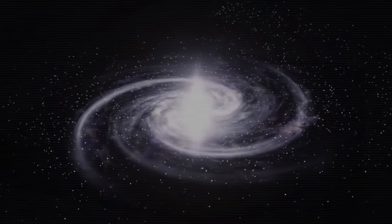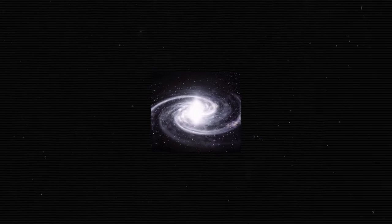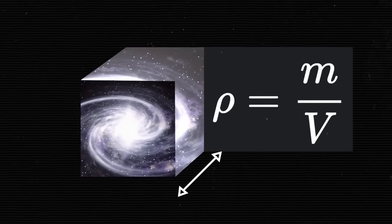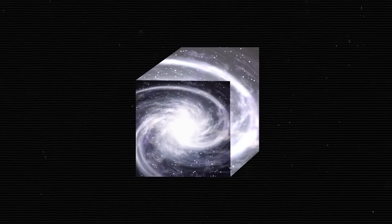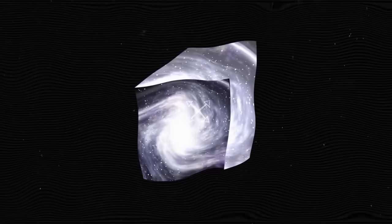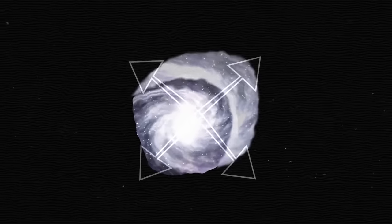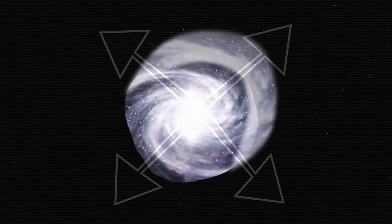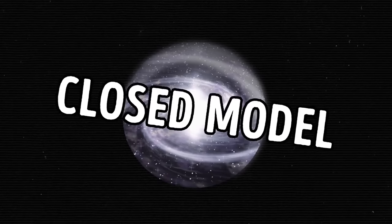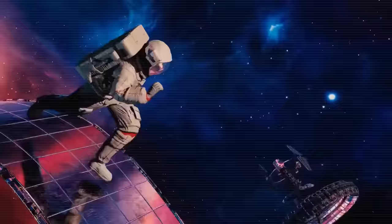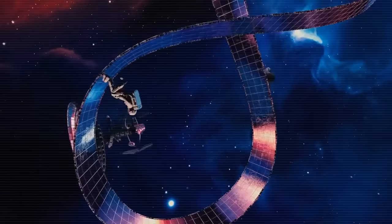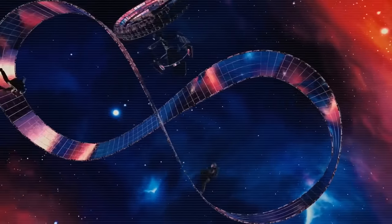When we speak about the universe's density, we mean the amount of matter packed into a given volume of space. If the density of the universe is so great that its gravity is more powerful than the force of its expansion, the universe will curl into a sphere. This is called the closed model. The coolest thing about such a universe? Even though it is finite, it has no bounds.